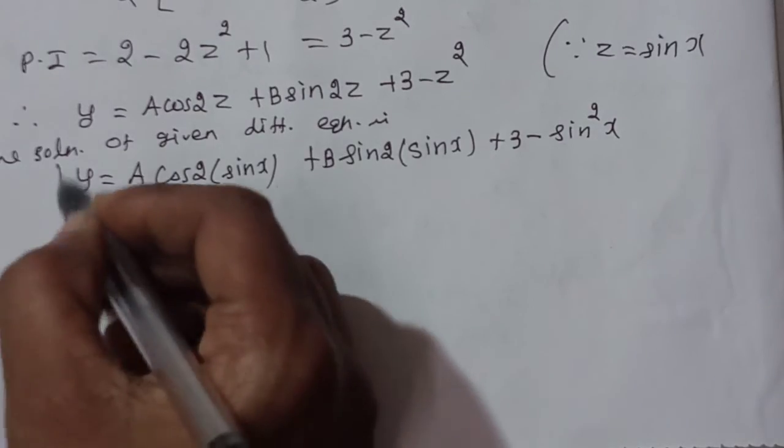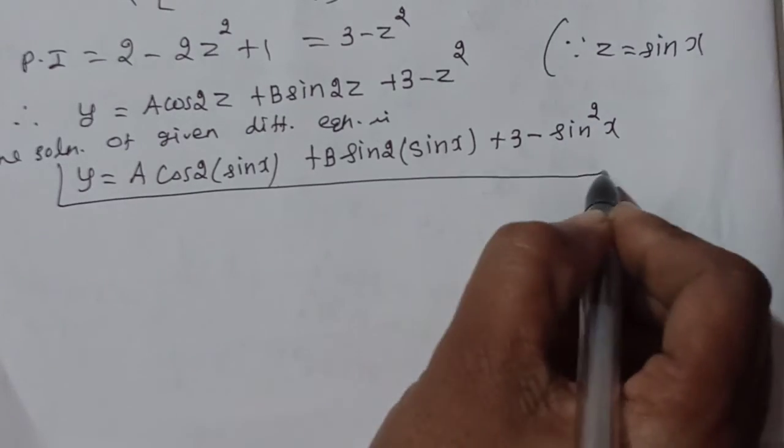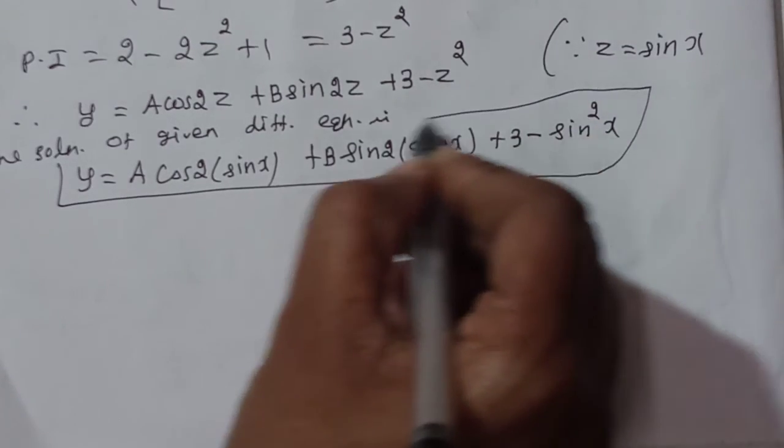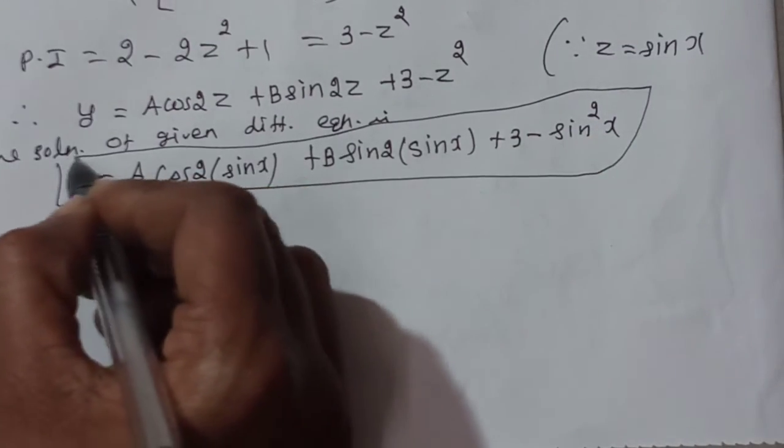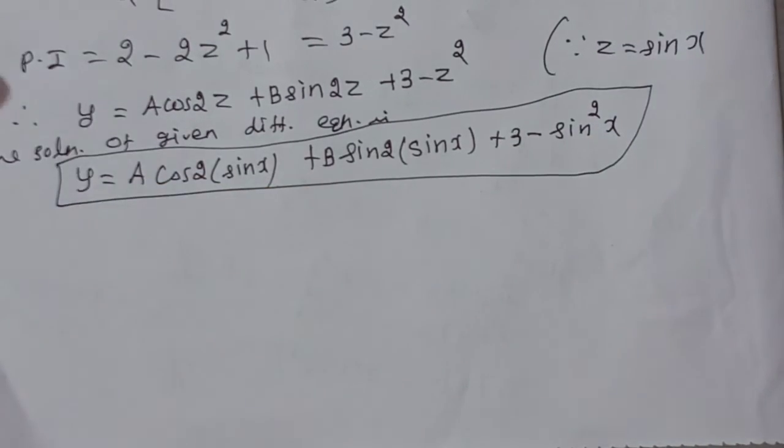This is the complete solution. The technique used is change of variable: when coefficients are functions of x, we substitute appropriately to convert to constant coefficient form.